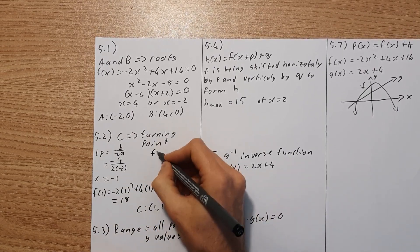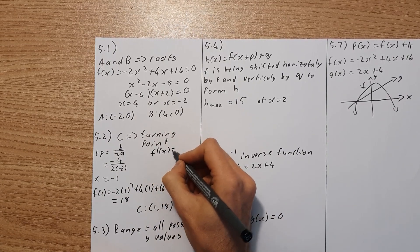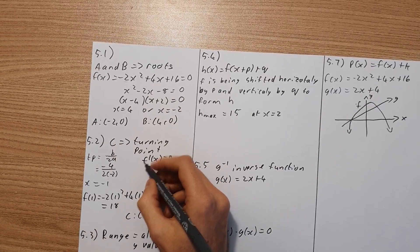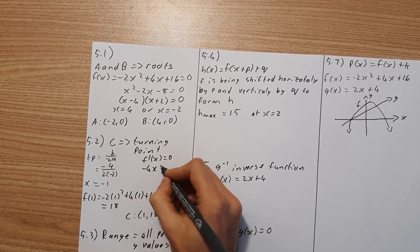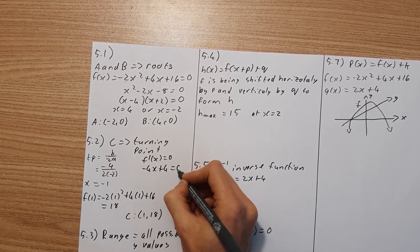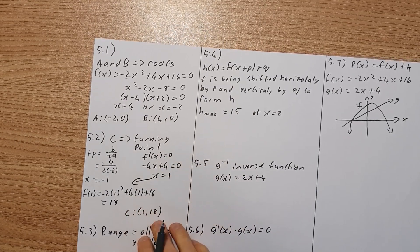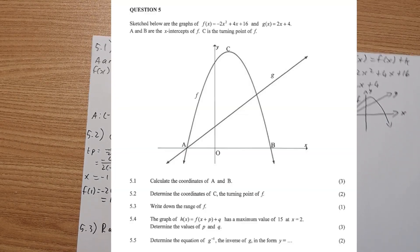The other way you could have done it is by setting f prime of x equal to 0. So if you take the derivative of f of x, it's then going to be negative 4x plus 4 equal to 0. And then you'll also get x equals 1. And then you just plug it into your function and you'll also get C.